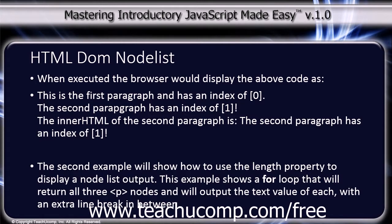The second example will show how to use the length property to display a node list output. This example shows a for loop that will return all three paragraph nodes and output the text value of each with an extra line break in between.